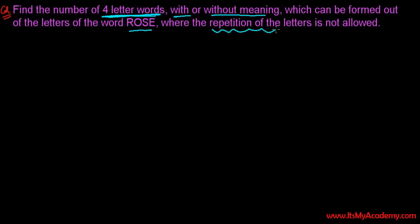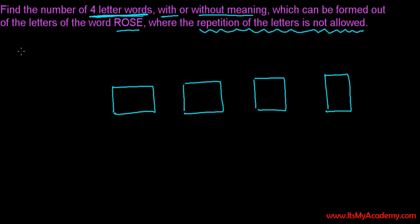This keeps strictly on your brain - repetition is not allowed. It means the letter cannot be repeated. So we need to make a four letter word with meaning or without meaning, no matter. The letters we have are R-O-S-E. There are four letters and we need to form a word with four letters, with meaning or without meaning.